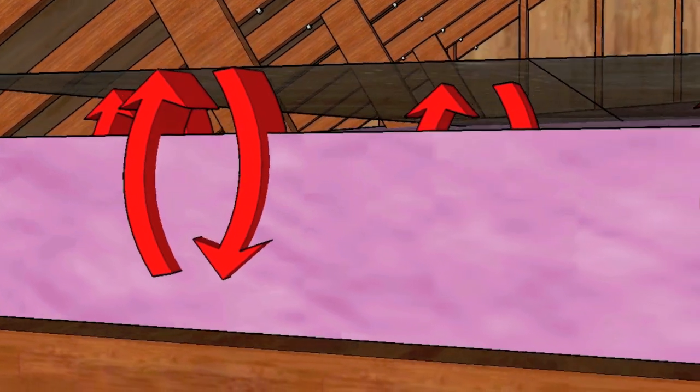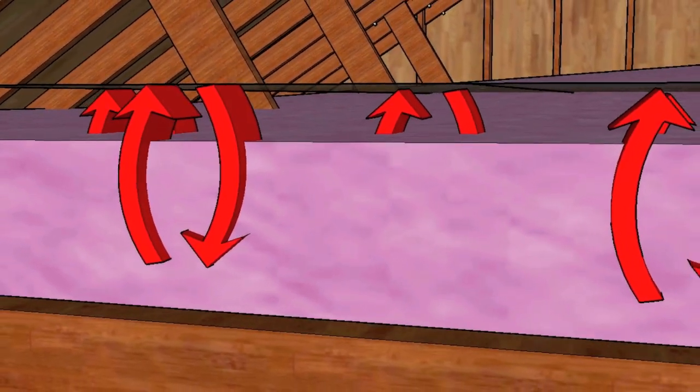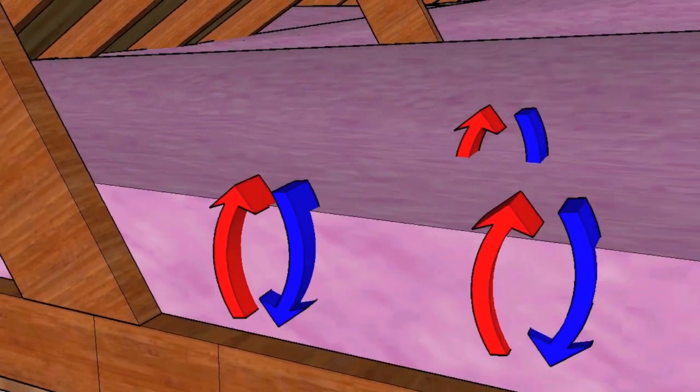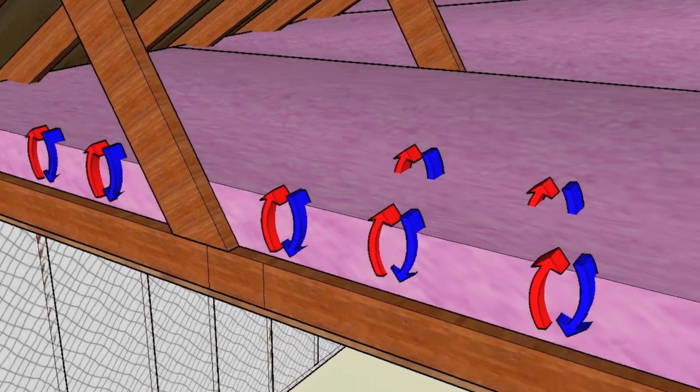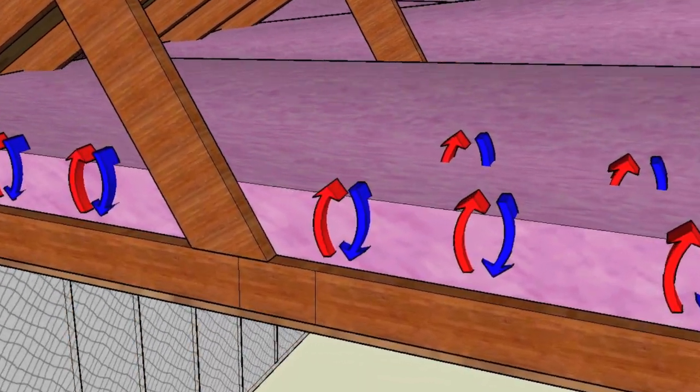First, by reducing heat loss in its radiant form, and second, by minimizing what's called convective looping. This is the airflow within your attic insulation that significantly reduces its R value.